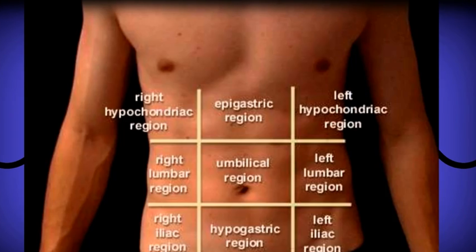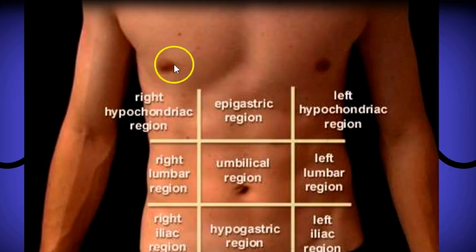You can use this protocol for an appendix ultrasound as well, just focusing your scan on the right side of the body including the pelvis. You can also use this for a FAST scan where you're looking for free fluid in the trauma patient, or for an abdominal limited scan. I hope this helps — see you later.